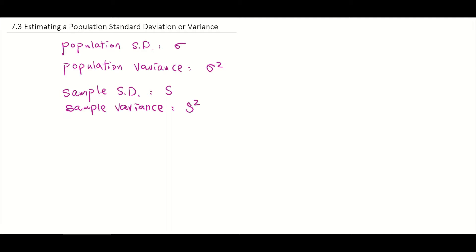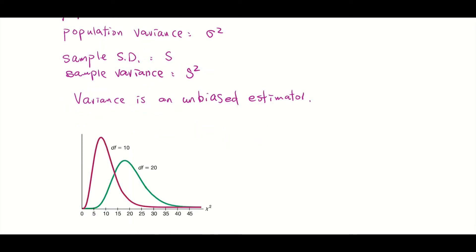The reason why we can estimate a population standard deviation or variance is because variance is an unbiased estimator. And in a normally distributed population, the sample variances are distributed like the graph below. We call this kind of distribution chi-square distribution.